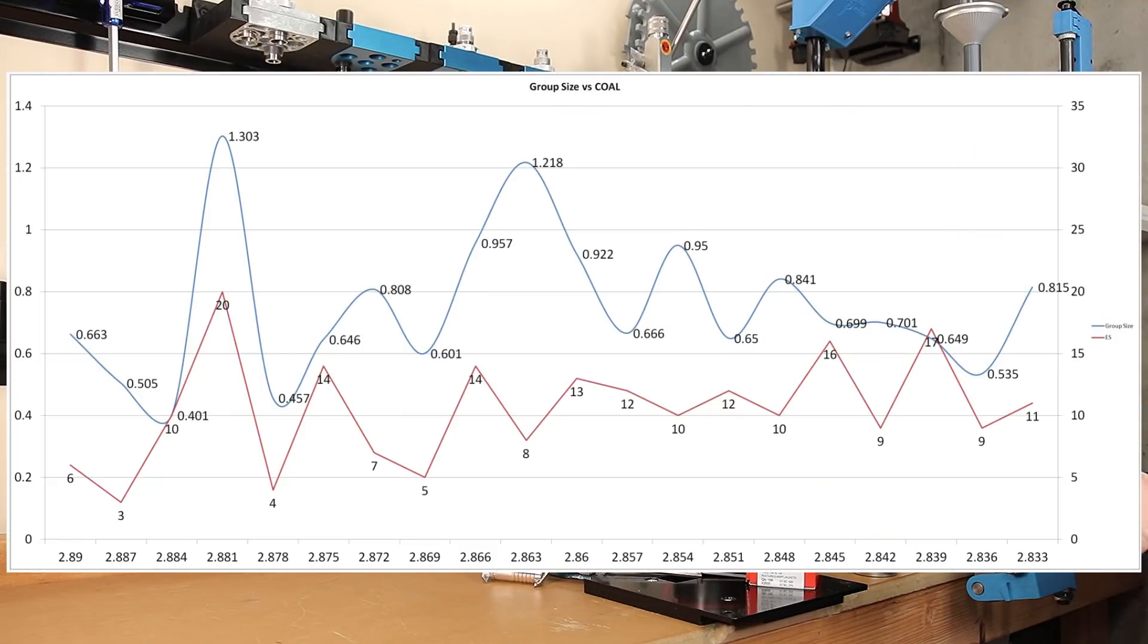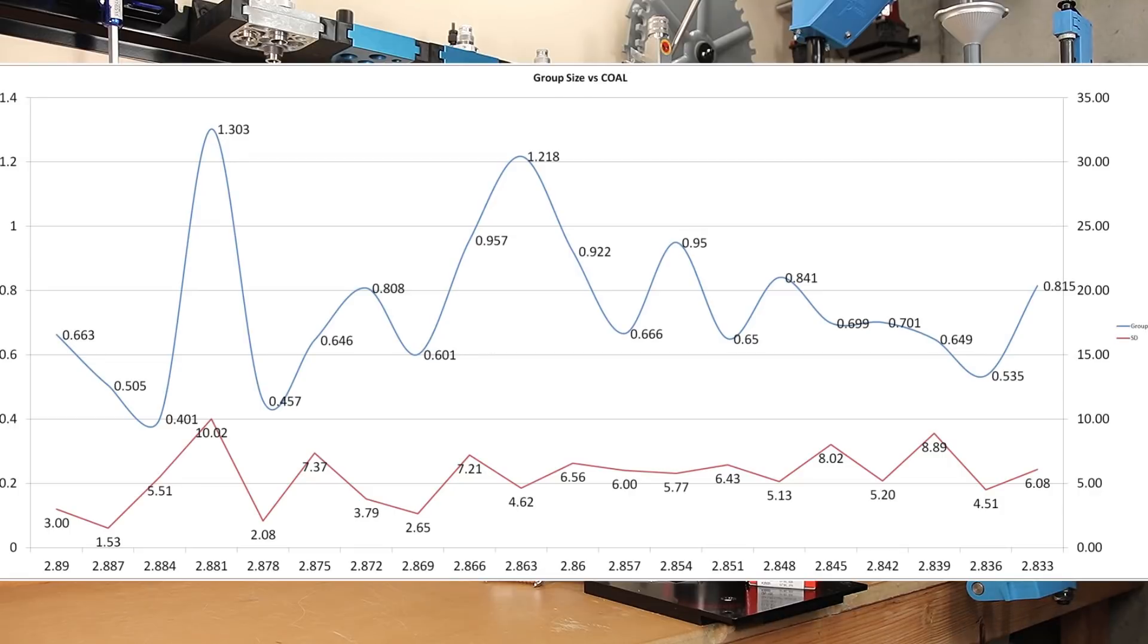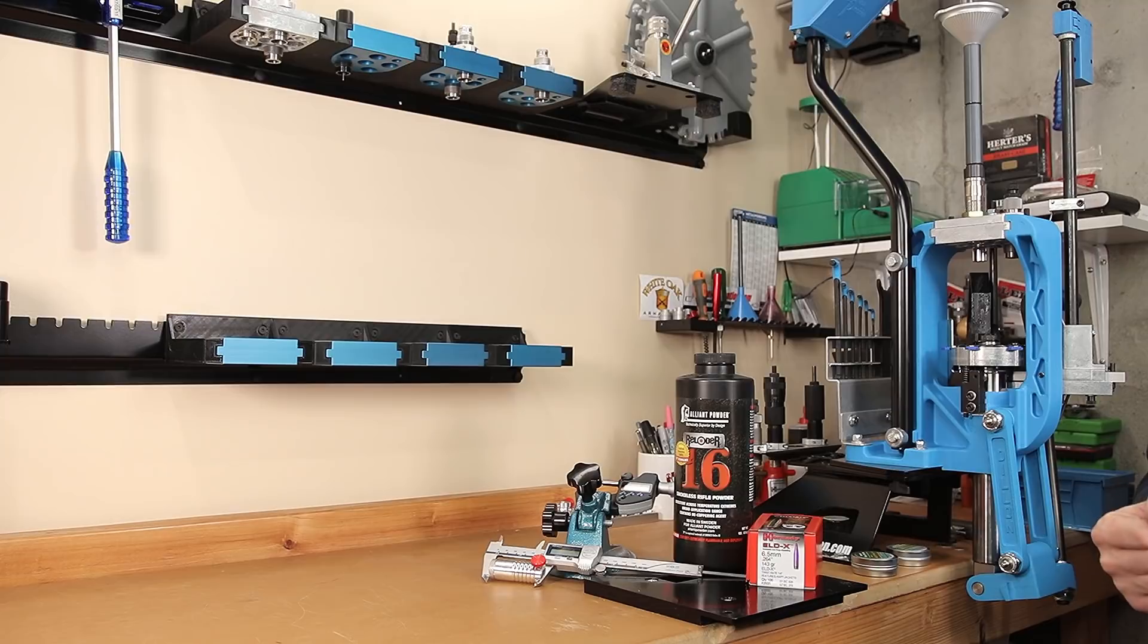But let's translate this information over to the group data. Now we take our same cartridge overall length chart that we looked at earlier, post our extreme spreads on there. We can see that our higher extreme spread matched up with our largest group. Again, noting an area in the chart we probably want to avoid with any further load development. Overall, we don't see any bad velocity information that would cause us concern with our group data. Overall, as far as statistics are concerned, I'm pretty pleased. If you'd like to see the plot with standard deviation on it, here you go. Keeping in mind we only tested a range of about 60 thousandths in total cartridge overall length variation. Maybe testing a little bit further down the line would yield some more interesting results.